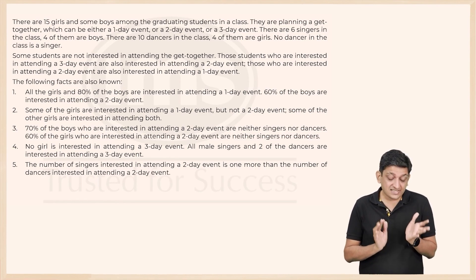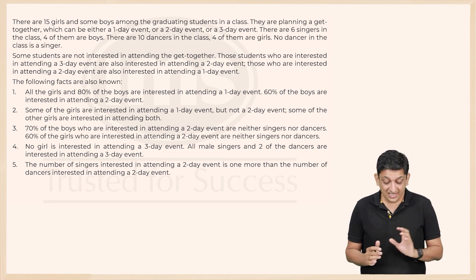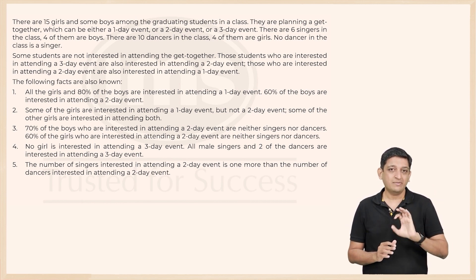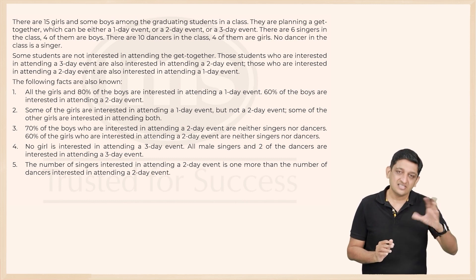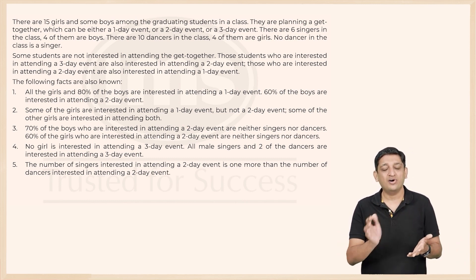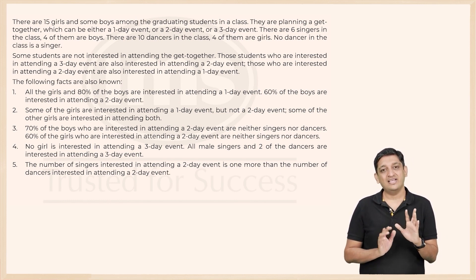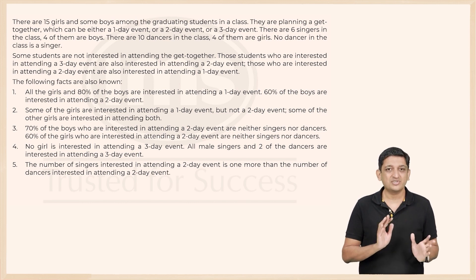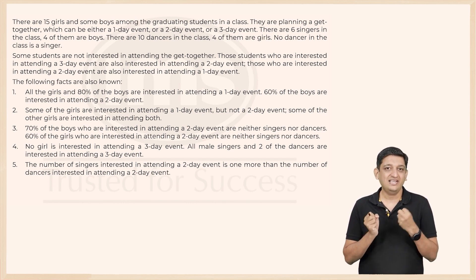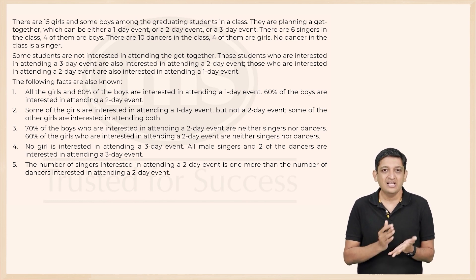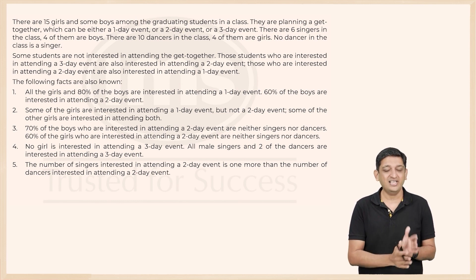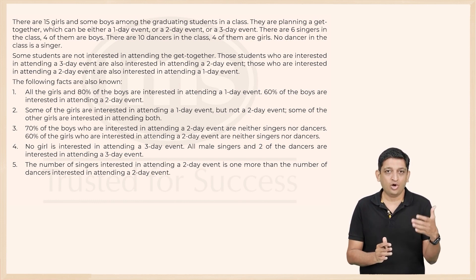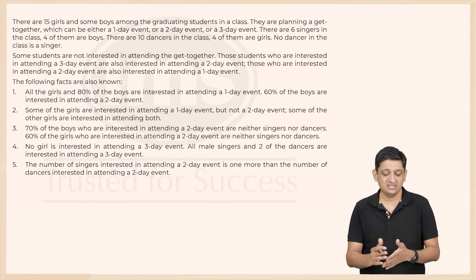In this set, there are 15 girls and some boys among the graduating students in a class. They are planning a get-together which could be a one-day, two-day, or three-day event. There are some singers and some dancers — both boys and girls — as well as some people who neither sing nor dance, and some who may not be interested in attending the event at all. This is a difficult set, but it can be solved with persistence.